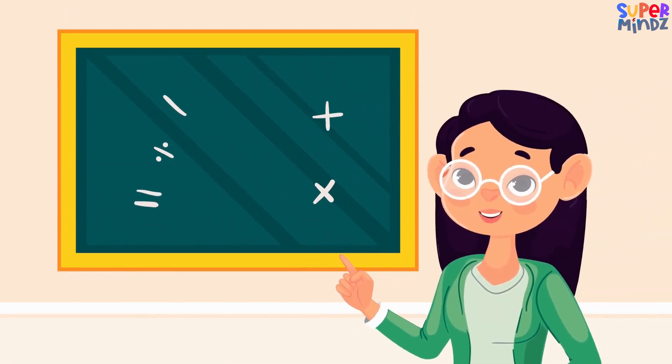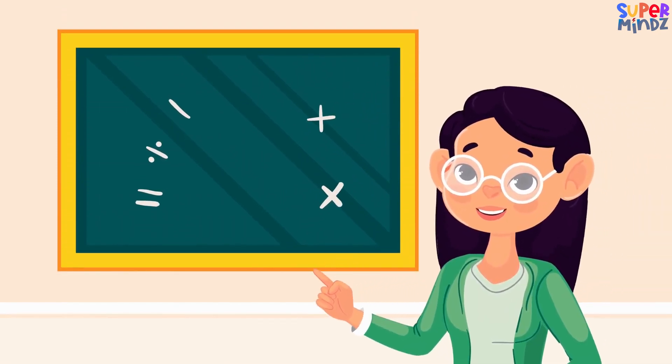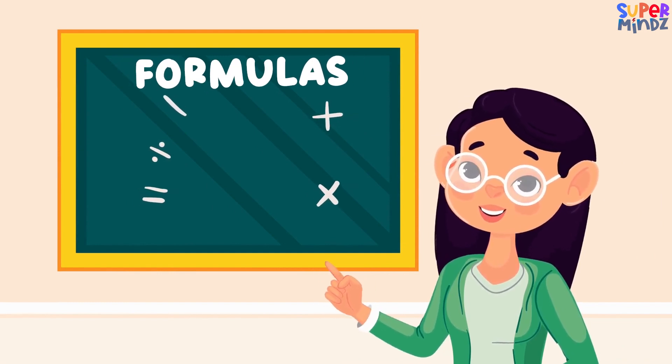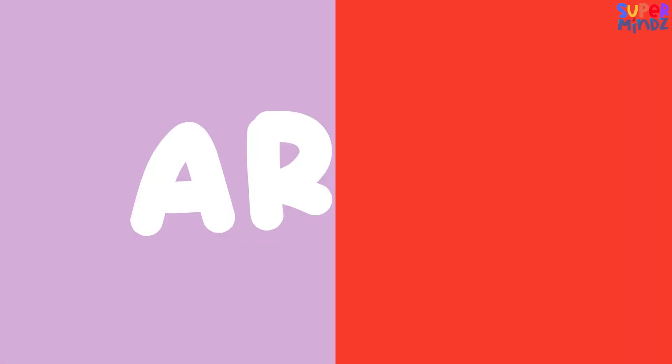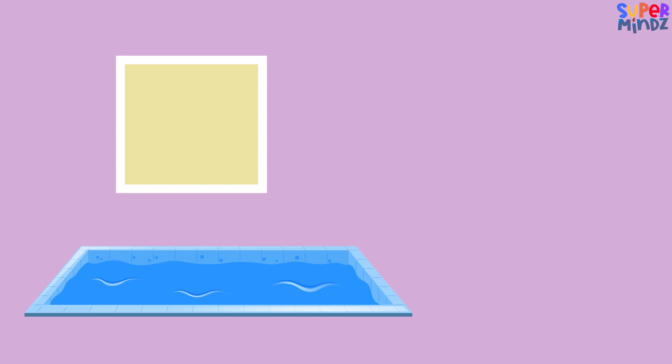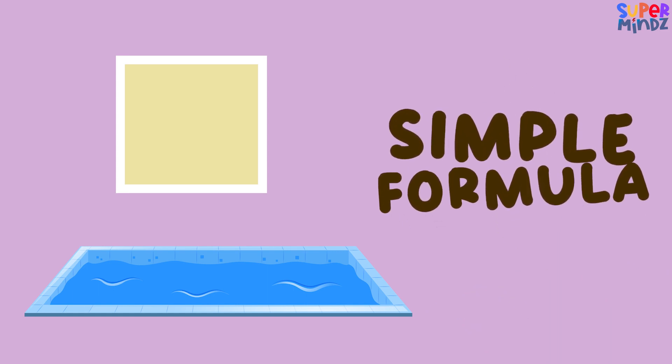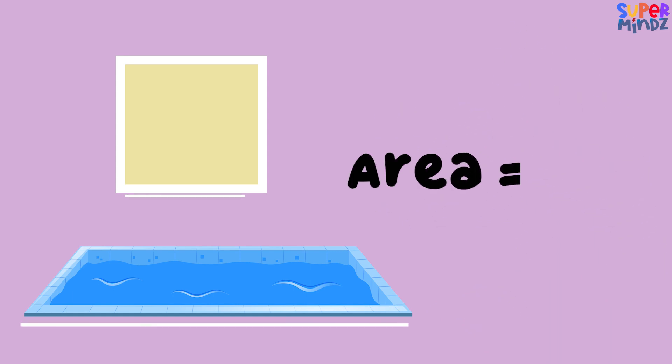Hey there, today we're diving into some exciting stuff: formulas for area, volume, and perimeter. Let's start with area. Imagine you have a square box and a rectangular swimming pool. How do we figure out how much space they cover? Well, we use a simple formula: length times width.